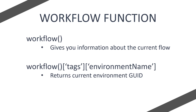This allows us to pass the GUID into the Get Environment as Admin action and get all the environment information for whichever environment the flow is currently running on. So if the flow is running in dev it returns dev environment information; if we move it via a solution to test, the workflow function returns the test GUID and Get Environment as Admin returns all the test information, and so on for production. I'm going to put this expression in the description so you can just copy and paste it rather than writing it out yourself.